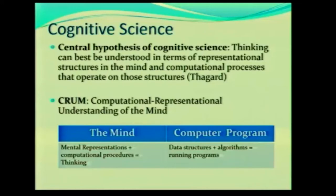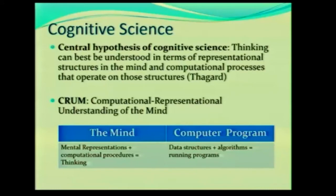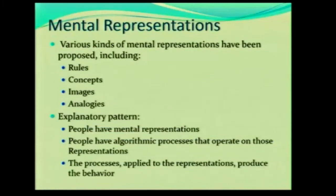One of the reasons I bring this up is because if you look at cognitive science in the field of computing, this is one of the oldest philosophies, still relatively young compared to other areas. Here we have the mind. What is the mind? The mind is mental representations plus computational procedures — the computational procedures operate on mental representations, and that gives you thinking. What's the analogy in the computer world? You have data structures and algorithms. Put those together and you have running programs. See the analogy? This is a pretty basic analogy when we look at CRUM.